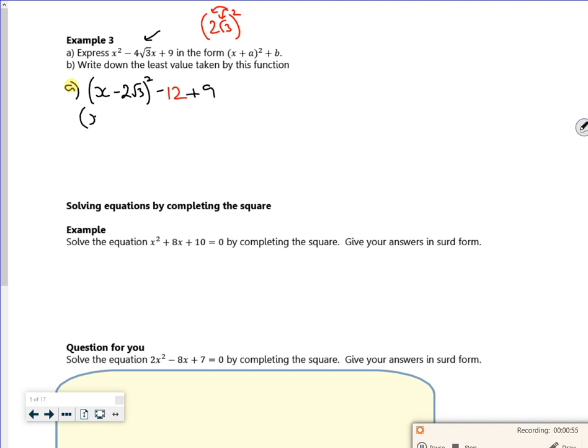So I've got x minus 2 root 3 all squared minus 3 there. So then it says write down the least value taken by this function. So if you were to graph this, you'd have a graph which looks something like that,